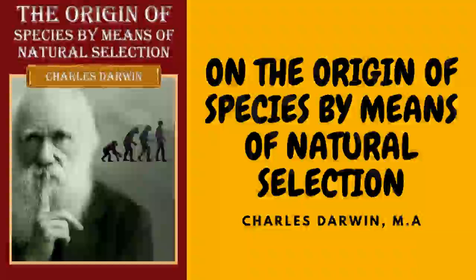The principle of selection I find distinctly given in an ancient Chinese encyclopedia. Explicit rules are laid down by some of the Roman classical writers. From passages in Genesis it is clear that the color of domestic animals was at that early period attended to. Savages now sometimes cross their dogs with wild canine animals to improve the breed, and they formerly did so, as is attested by passages in Pliny. The savages in South Africa match their draft cattle by color, as do some of the Eskimos their teams of dogs. Livingstone shows how much good domestic breeds are valued by the negroes of the interior of Africa who have not associated with Europeans.